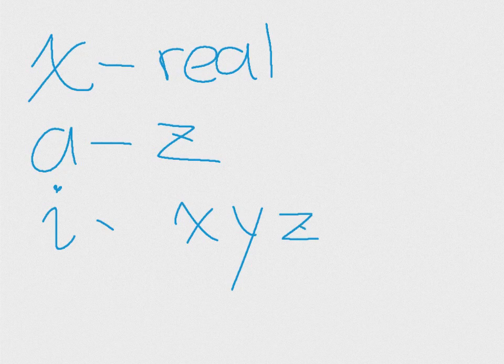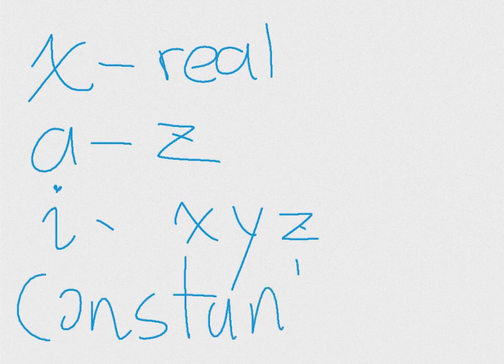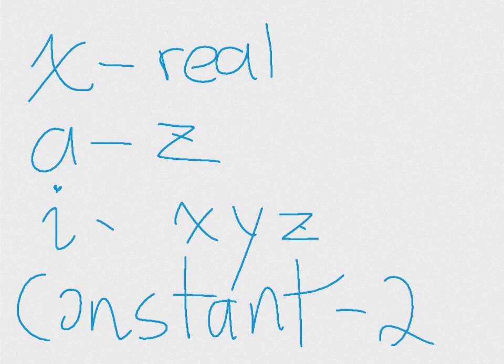Now, the next thing we're going to learn is what a constant is. So a constant is a number, basically, to put it in simple terms. A constant is just a number.